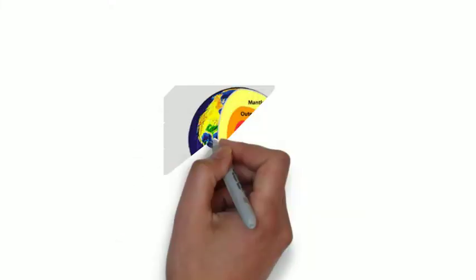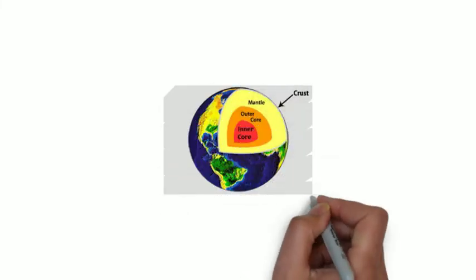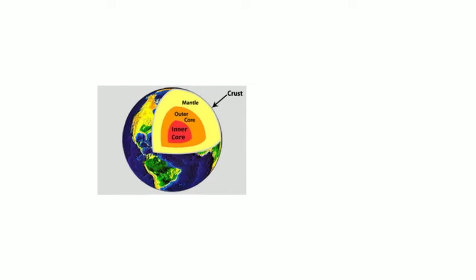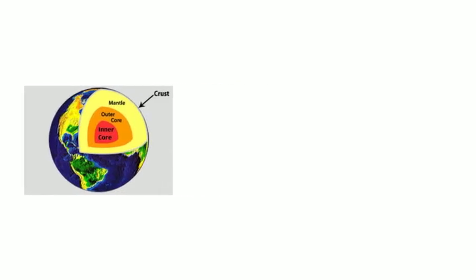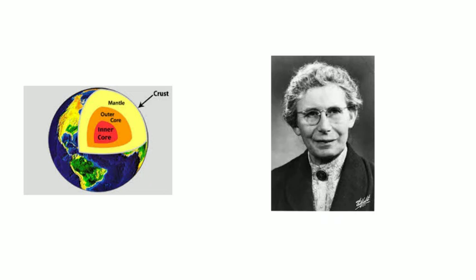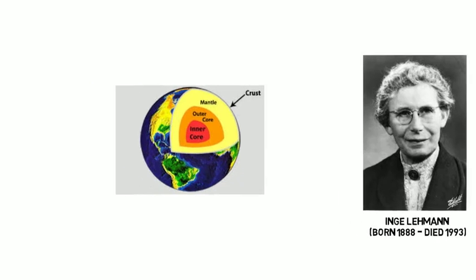Generally speaking, the Earth has three main layers, namely the crust, mantle and core. The Danish seismologist and geophysicist Inge Lehmann, born 1888, died 1993, further discovered that the Earth's core consists of a solid inner core and a molten outer core.